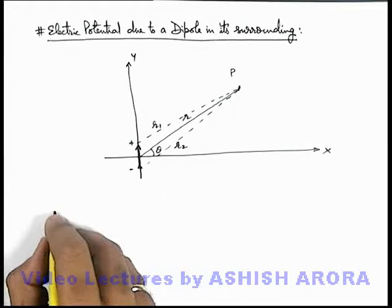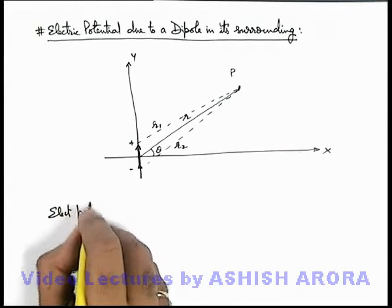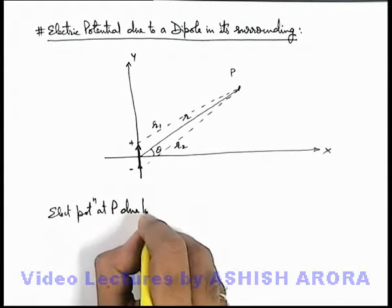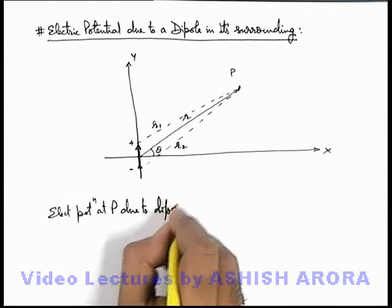Then we can write electric potential at P due to dipole charges.